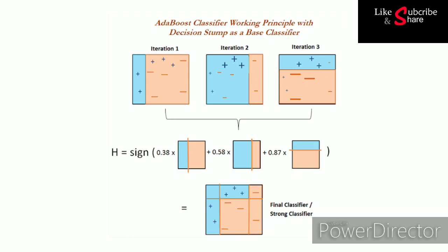These weights can be approximated as the accuracy of each base classifier. For example, we start with a decision tree that splits the data at each node using binary questions to improve information gain. During training, the current decision tree tries to make much better splits than the previous one, because the previous tree made some mistakes. The current one improves accuracy by putting more weight on the previously misclassified observations.